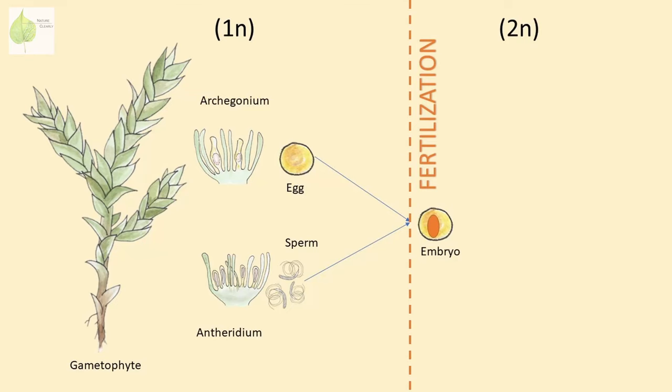Once the sperm gets to the egg, the sperm and egg combine into one cell, forming a zygote. This zygote then divides and grows into an embryo via mitosis. Note that the zygote and the daughter cells resulting from this mitosis carry genetic information from both parents. This is the beginning of the diploid or sporophyte phase of the moss life cycle.